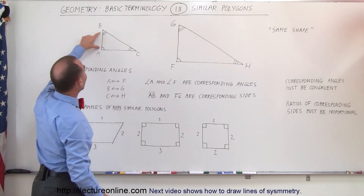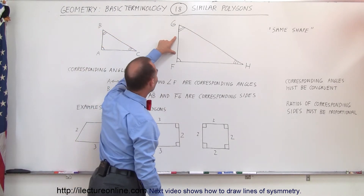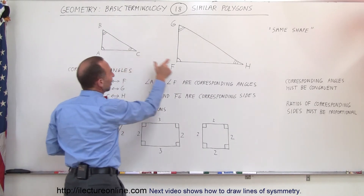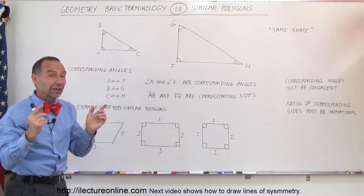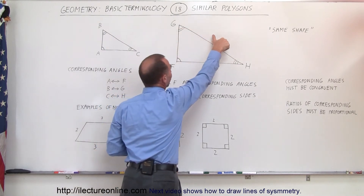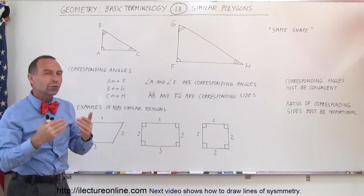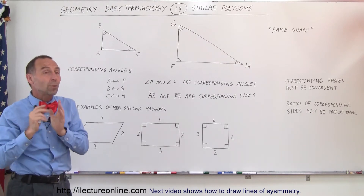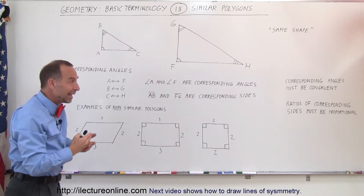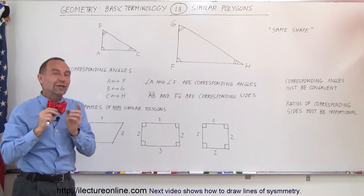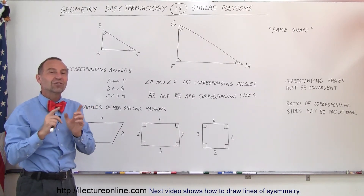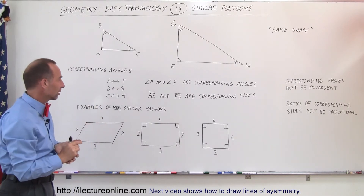It turns out that the ratios of those sides are the same, or what we call proportional. For example, if I divide the length of this side by the length of this side, I get a certain ratio. If I take the length of this side and divide it by this side, I get another ratio. Those two ratios will be the same. And if I take the long side and divide it by this long side, I get another ratio — and all three ratios will be equal to each other. So if the corresponding angles are congruent and the ratios of the corresponding sides are proportional, then the shapes are similar — we have similar polygons.